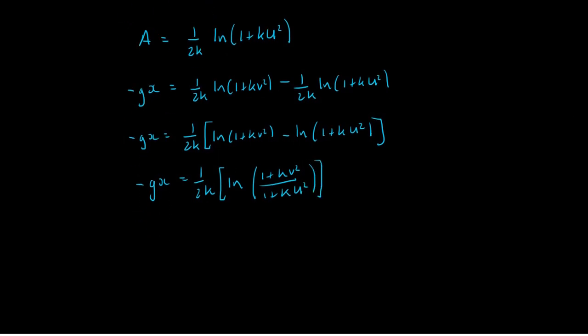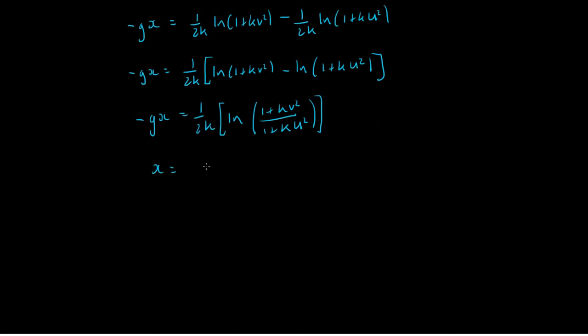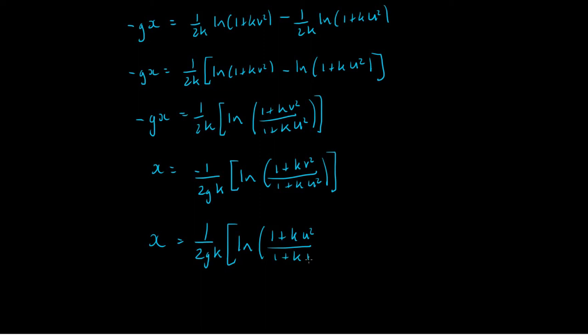And now I'm going to divide by minus g. So we end up with x is equal to minus 1 over 2gk times the natural logarithm of 1 plus kv squared divided by 1 plus ku squared. And another consequence of the addition subtraction rule of logarithms is that if you have a negative out the front, we can swap these around. So we end up with x is equal to 1 over 2gk times the natural logarithm of 1 plus ku squared divided by 1 plus kv squared.